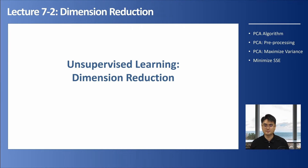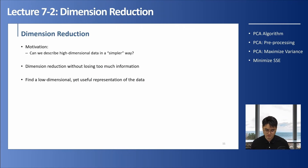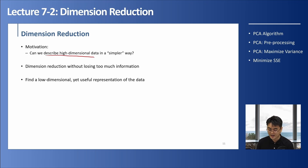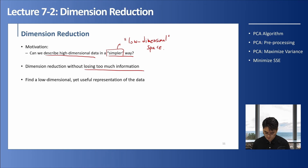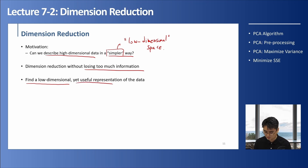Welcome back. We're going to learn about dimension reduction in this class. When we're doing dimension reduction, the reason is because we want to describe some high dimensional data in a simpler way - in a low dimensional space. What we want to achieve is some dimension reduction without losing too much information. We need to find a low dimensional, simple representation that is still useful to represent the original data.